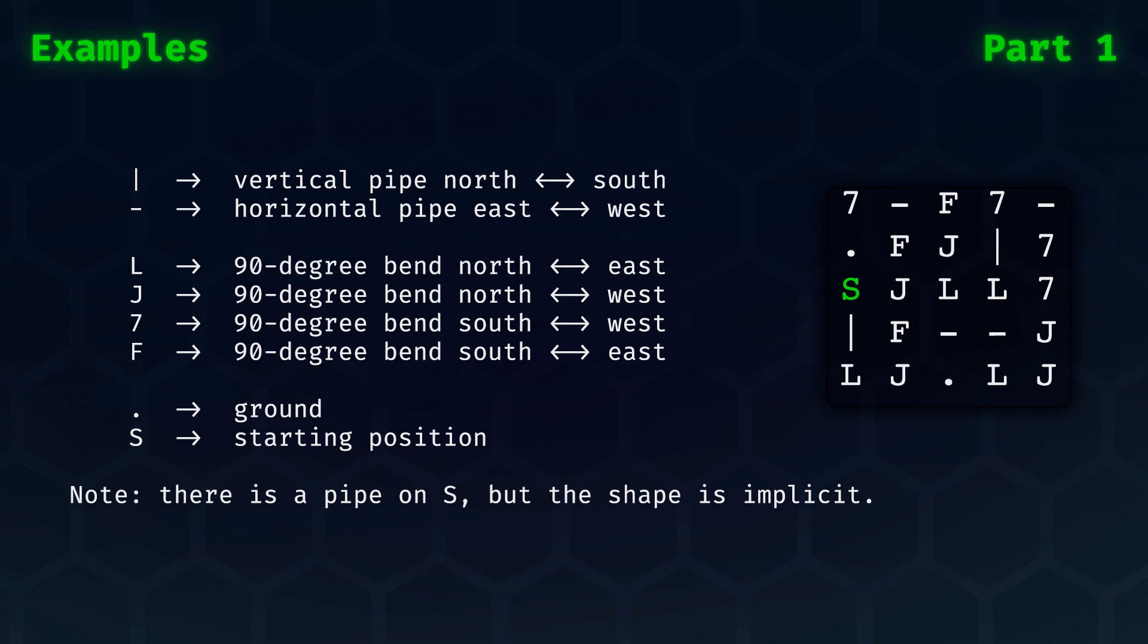The letter S indicates the starting position that is on the loop. Note that there is a pipe on S, but the shape needs to be inferred from the input.